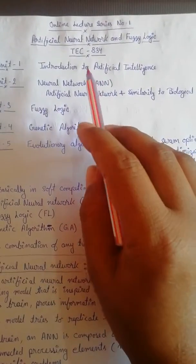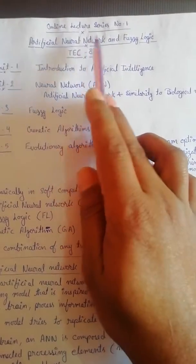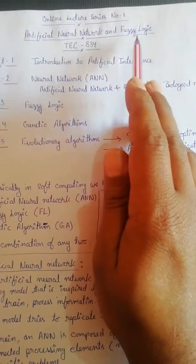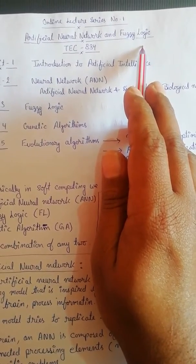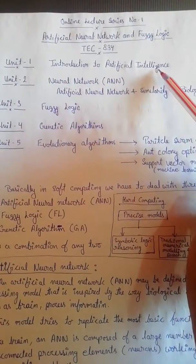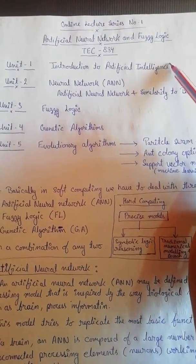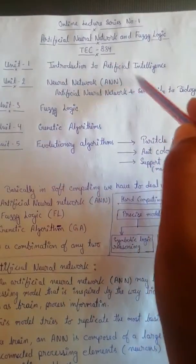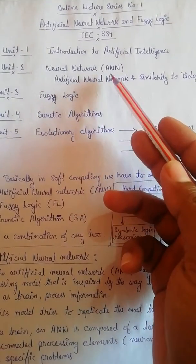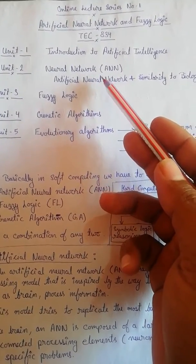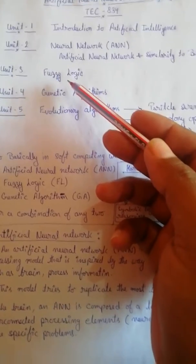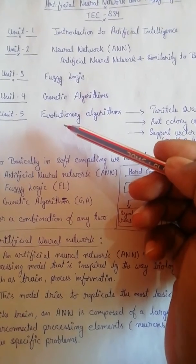Good afternoon students, welcome to online lecture series number one. The subject name is Artificial Neural Network and Fuzzy Logic. We have discussed unit one already in class and I have given you the questions of the first unit. The second, third, fourth, and fifth units — we have discussed some parts of the second unit but I'll discuss it again to avoid any confusion.